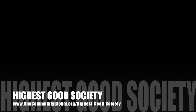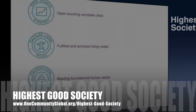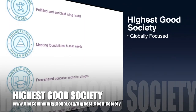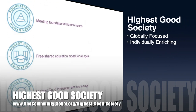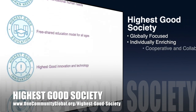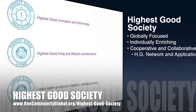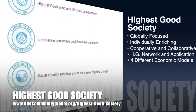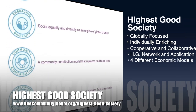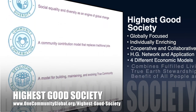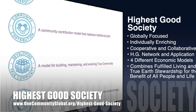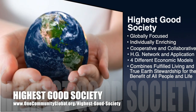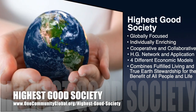The One Community approach to Highest Good Society is globally focused, individually enriching, cooperative and collaborative, includes a Highest Good network and application, four different economic models, and combines fulfilled living and true earth stewardship for the benefit of all people and all life on this planet.